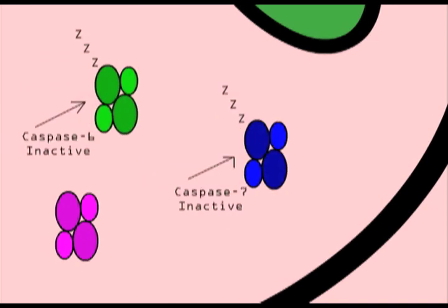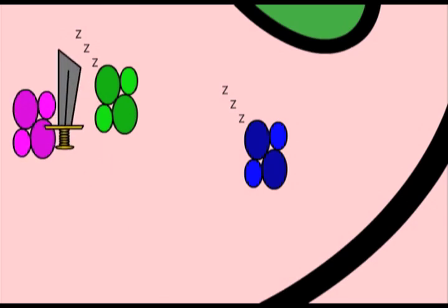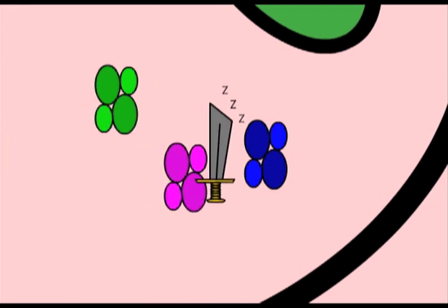Executioner caspase 3 cleaves and activates executioner caspase 6. Caspase 7 is activated downstream.